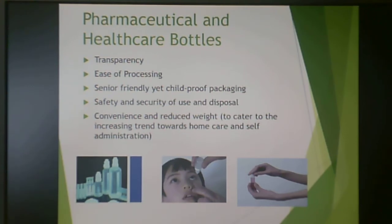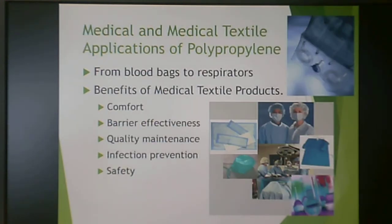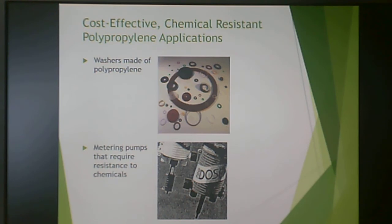Pharmaceutical and healthcare bottles squeeze really nicely, are easy to process, can achieve reasonable transparency, and are shatterproof — combined with weight reduction, this makes them more useful than glass. Medical textiles are a big application: blood bags, respirators, surgical gowns, caps, and masks — single use, thrown away, and can be sterile-packaged prior to use. Polypropylene is also made into washers because of its good chemical resistance, so it can be put into metering pumps that require resistance to chemicals.